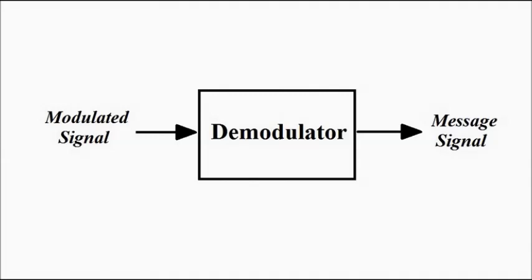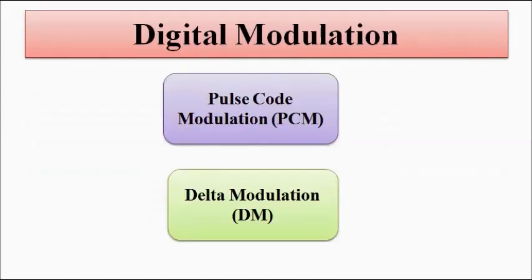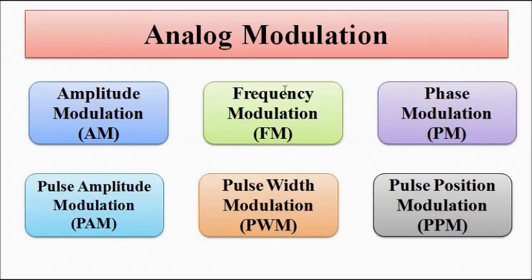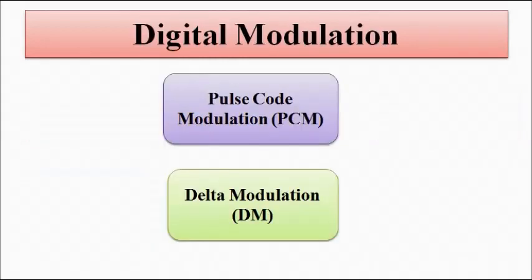Modulation is of two types — analog modulation and digital modulation. Analog modulation involves amplitude, frequency, and phase modulation, and also modulation using pulse signals: pulse amplitude, pulse width, and pulse position modulation. Digital modulation involves digital signals where analog-to-digital conversion methods are used — sampling, quantization, and encoding — and generally pulse code modulation and delta modulation techniques are used.